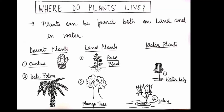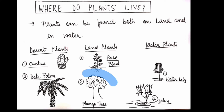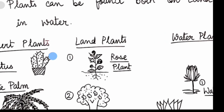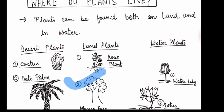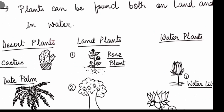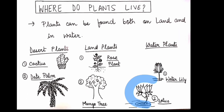Plants can be found both on land and in water. Two examples of land plants are the rose plant, which you can see in your garden, and the mango tree. Two examples of water plants are water lily, which you can find in a pond, and lotus.